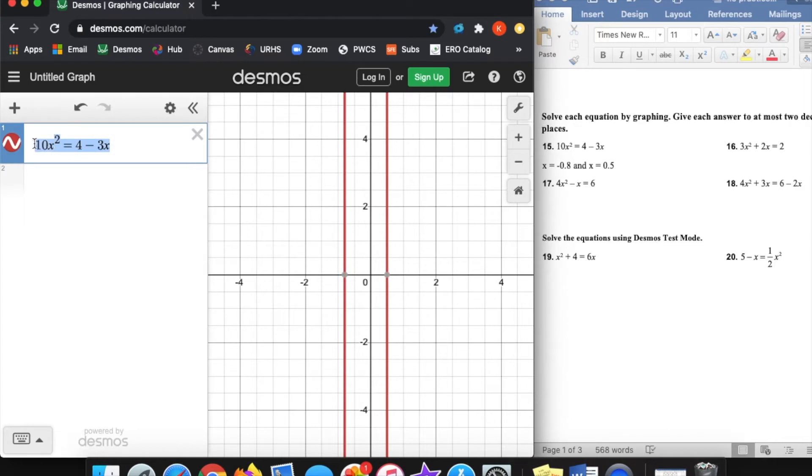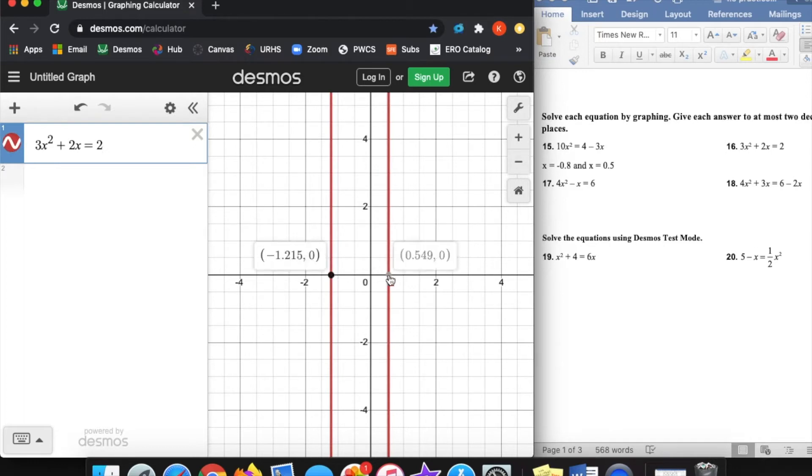Let's look at another one. If we look at 16, typing that in exactly how it looks, 3x squared plus 2x equals 2. Again, same idea. I got two vertical lines. And this one, again, it says give at most two decimal places. So let's make sure we follow that direction, and we give those two decimal places. So that would be two numbers after the decimal point, so that would be negative 1.22 if we round up, and x equals 0.55.